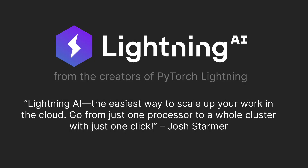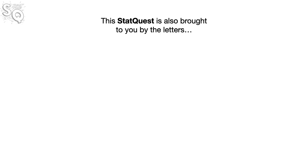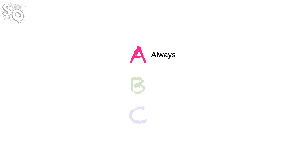Lightning AI — it's the easiest way to scale your work up in the cloud. This StatQuest is also brought to you by the letters A, B, and C.